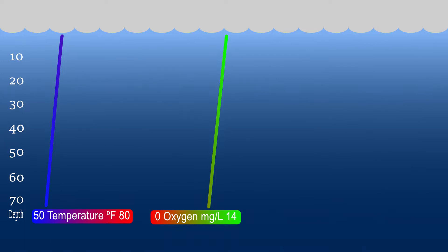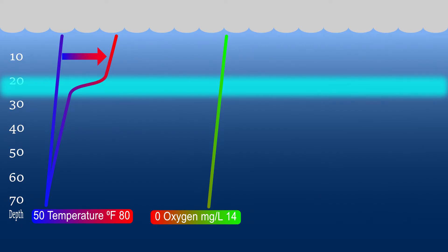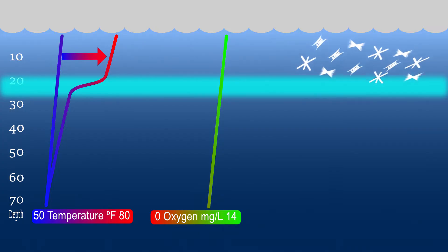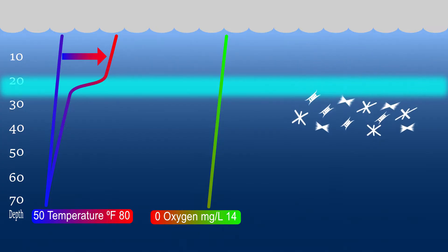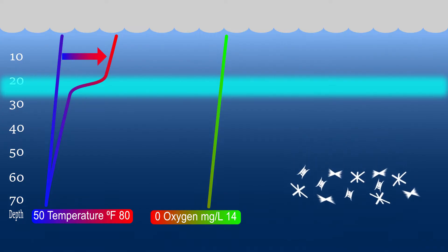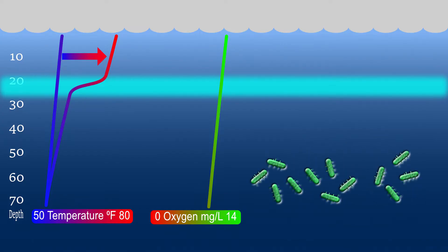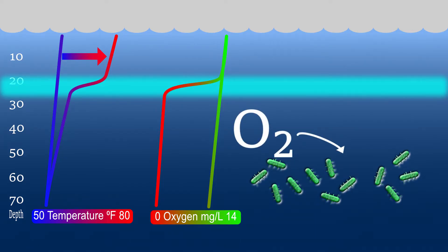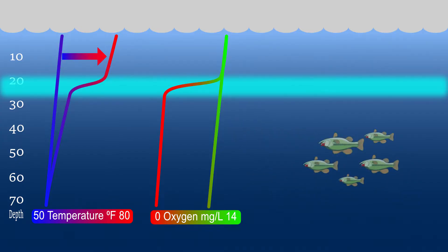During the spring, dissolved oxygen, just like water temperature, is evenly mixed. After the thermocline develops in early summer, a hostile environment for fish and other aquatic organisms starts to develop below the thermocline. As organic matter — like leaves or dead algae — sinks and decays, microbes consume the oxygen in the bottom layer. Since the upper and bottom layers don't mix, no new oxygen is available, and eventually the oxygen is completely absent. The bottom layer becomes a dead zone.